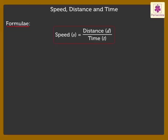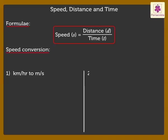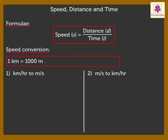There will be instances when the speed needs to be converted either from kilometer per hour to meter per second or vice versa. We know that one kilometer is equal to one thousand meters and one hour is equal to 60 minutes, which is equal to 60 into 60 seconds.